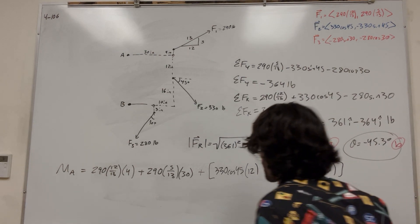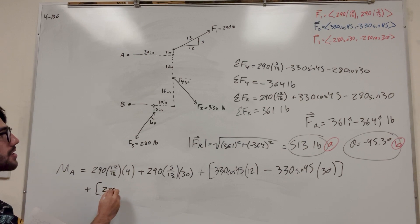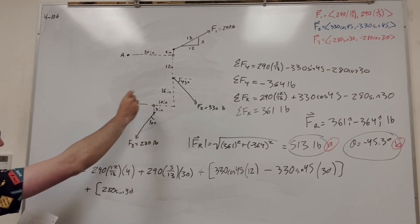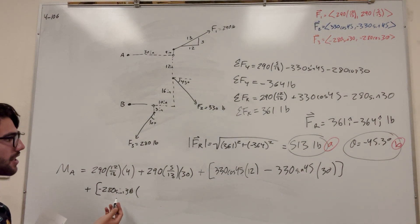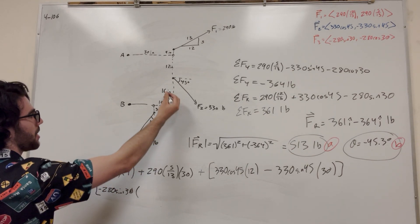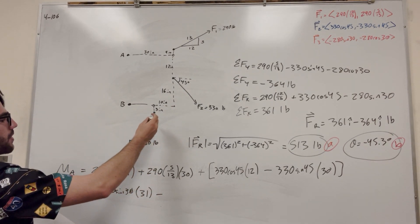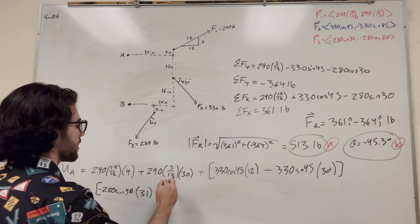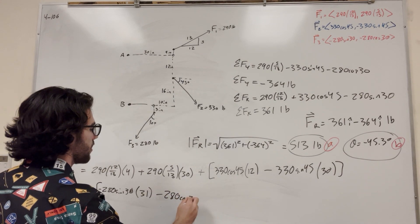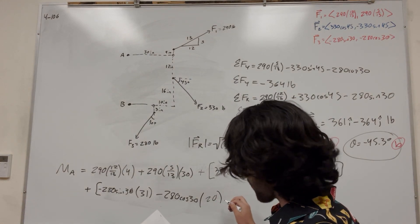Now Force 3 for the moment. In the X direction it's 280 sine of 30, but pulling that way makes it go clockwise, so it's negative. The distance in the Y direction is 3 plus 16 plus 12 equals 31 inches. Then in the Y direction, pulling down that way goes counterclockwise — wait, it's negative again. So minus 280 cosine of 30, and the distance in the X direction is 30 minus 10, which is 20 inches.